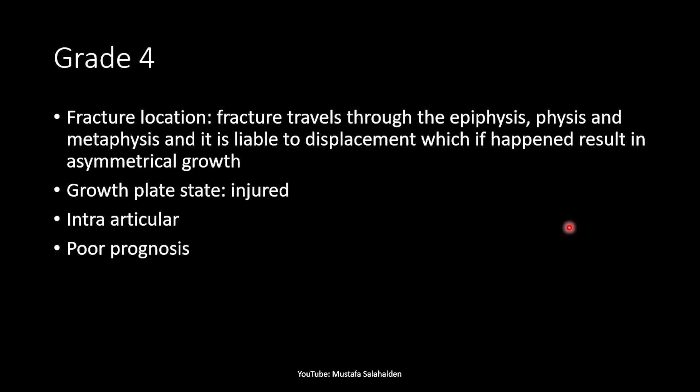Grade 4 is a fracture that travels through the epiphysis, the physis, and the metaphysis — it cuts through all the layers. It is liable to displacement, which if it occurs results in asymmetrical growth. The growth plate is of course injured and because of that it has poor prognosis. It is also intra-articular. As seen in the drawing, the fracture passes through the epiphysis, growth plate, and into the metaphysis.